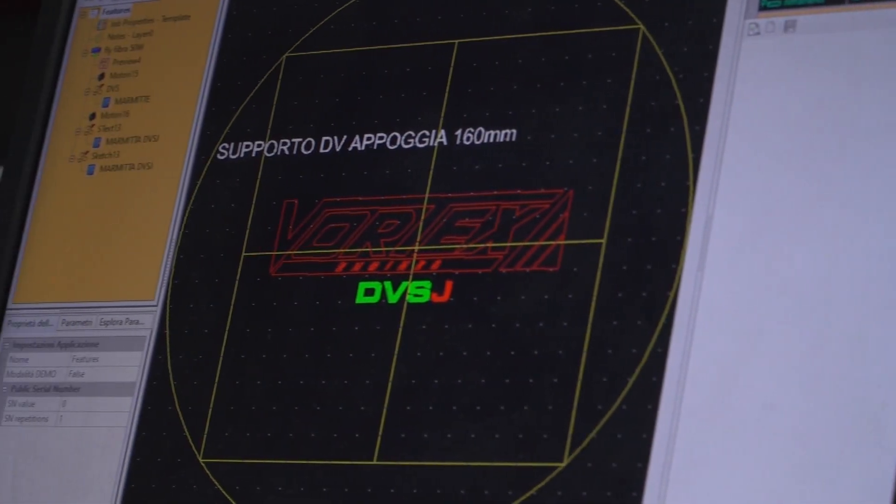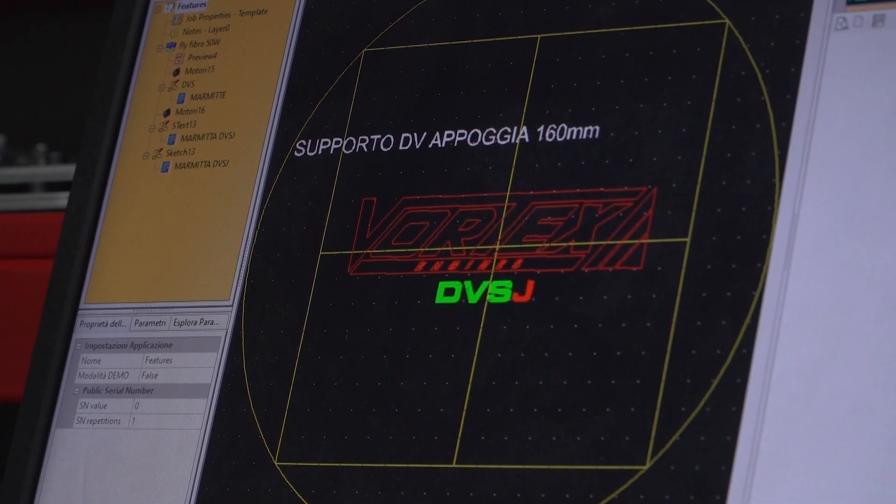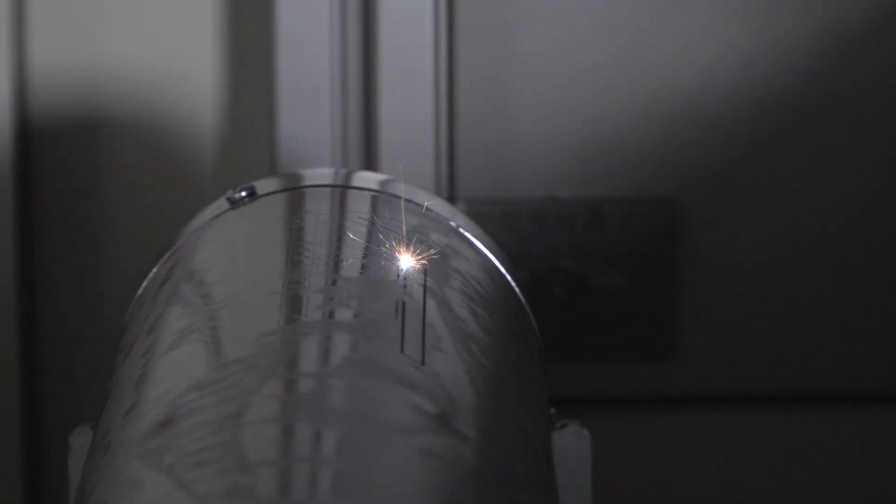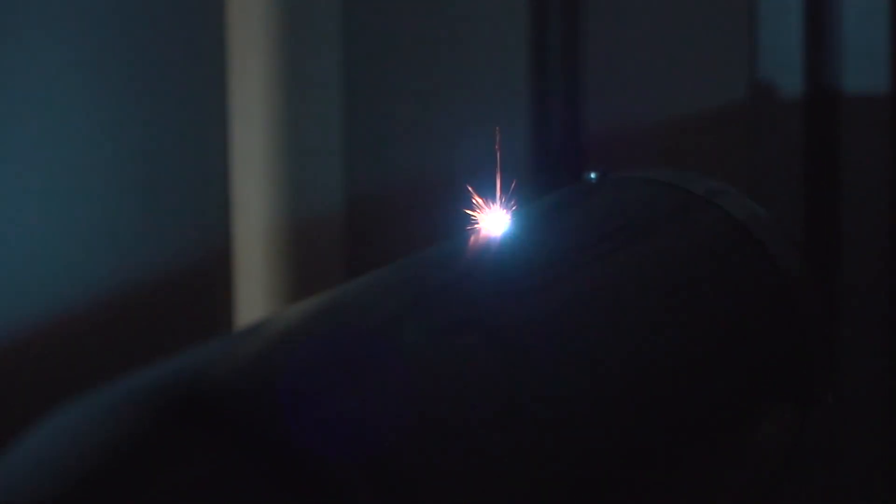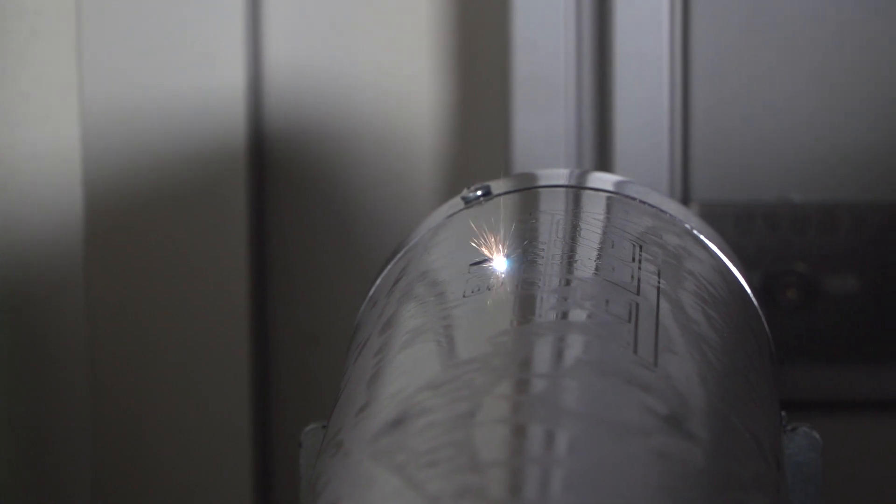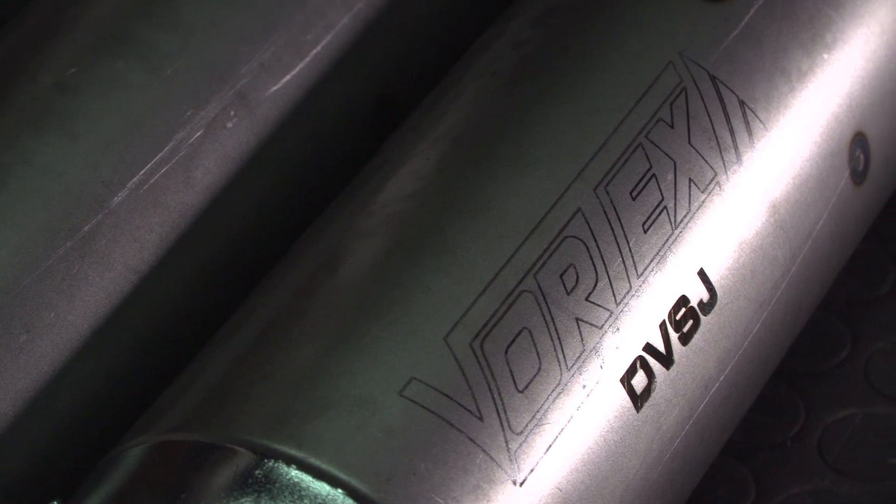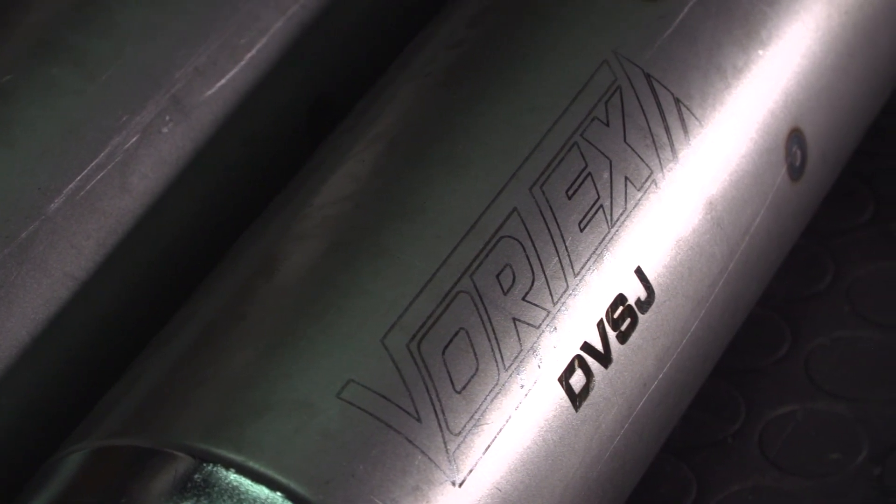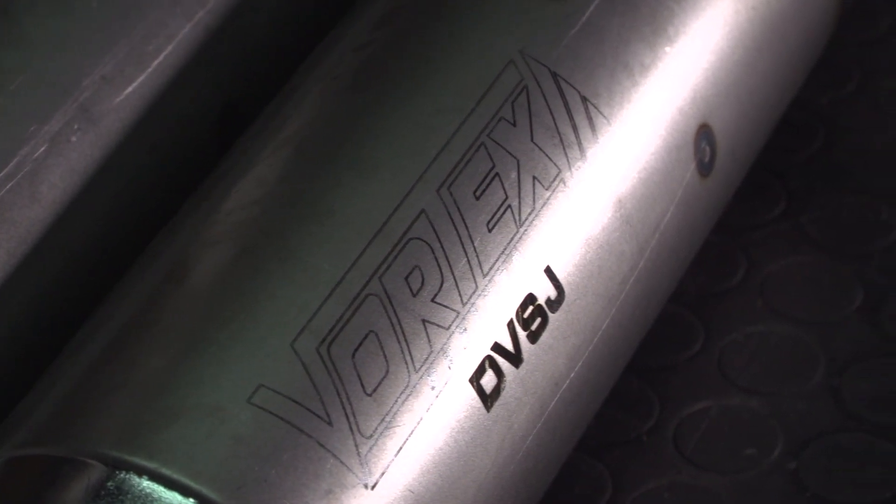Even a manufacturing phase as apparently banal as branding in reality implies an absolutely functional value. In fact, in order to guarantee the complete traceability of every single component of the various Vortex and Rock branded engines, the whole production is coded, so as to make the original spare parts immediately recognizable by all karters.